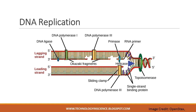The overall direction of the lagging strand is 3' to 5', and that of the leading strand is 5' to 3'. A protein called the sliding clamp holds DNA polymerase in place as it continues to add nucleotides — it is a ring-shaped protein that binds to the DNA. Topoisomerase prevents the overwinding of the DNA double helix ahead of the replication fork by causing temporary nicks in the DNA helix and then releasing it.